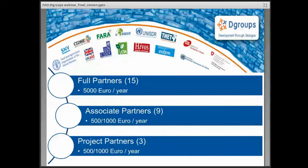If you look at this slide here, you'll see some of the logos of some of the key partners. We have 15 full partners at the moment, nine associate partners, and we have just recently introduced a new category of project partners. Overall, the dGroups partnership is managed by a foundation – the dGroups Foundation – which was established in 2009 in the Netherlands.